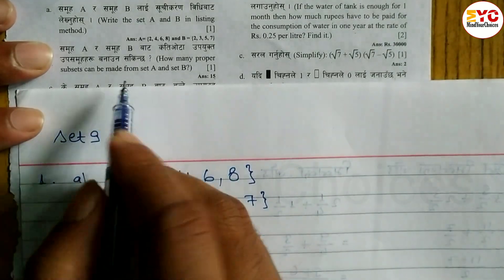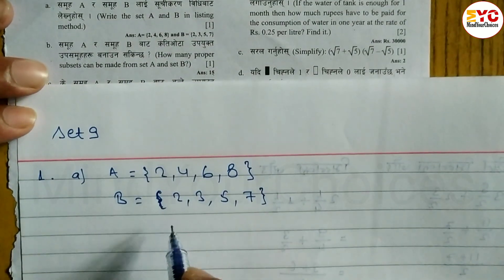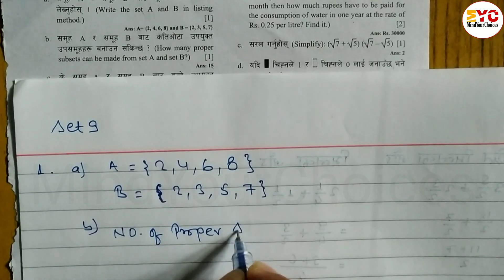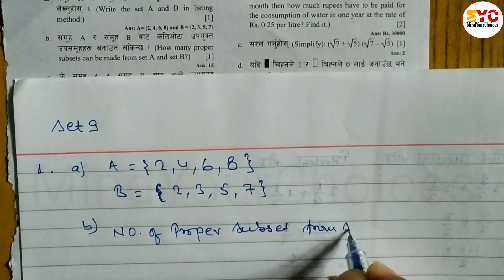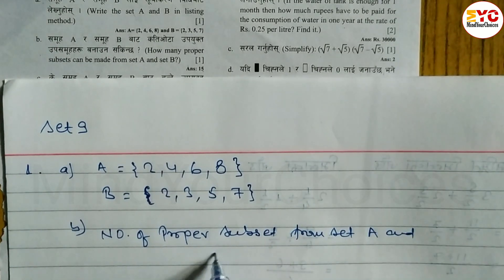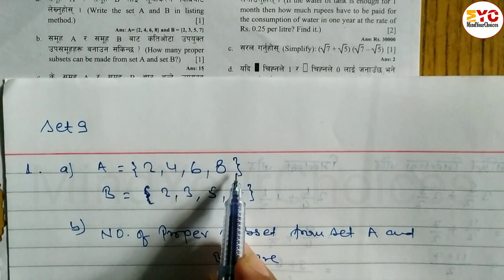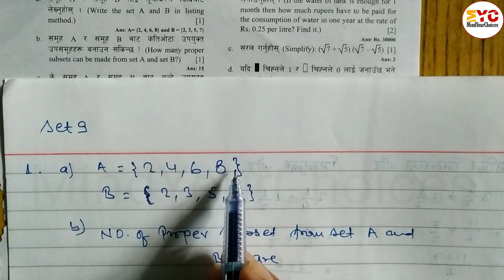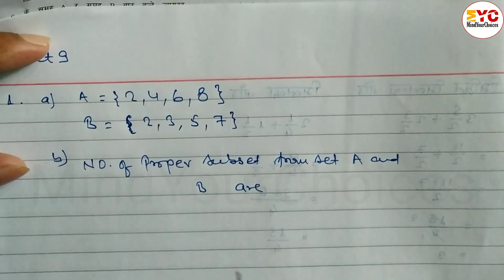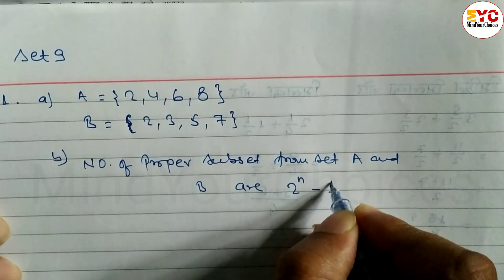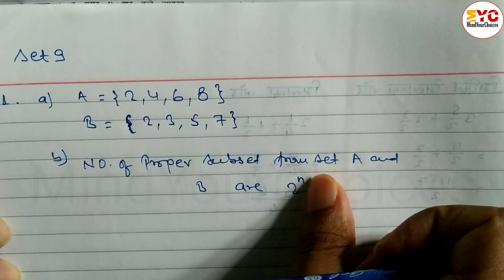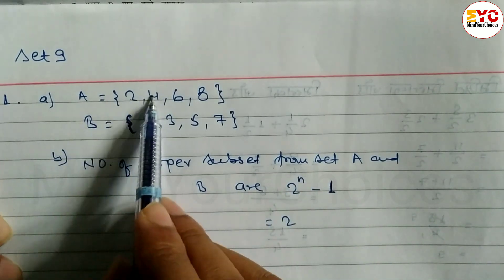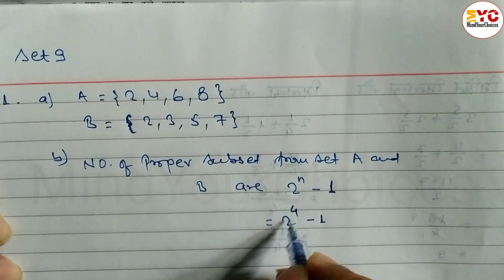For question B: how many proper subsets can be made from set A and B? Number of proper subsets formula is 2 power n minus 1. Set A has 4 elements: 1, 2, 3, 4, and set B also has 4 elements. So 2 power 4 minus 1.